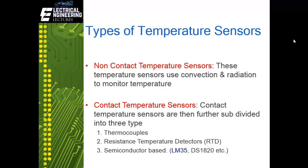The next category is resistance temperature detectors, which are similar to thermistors in that their electrical resistance changes with temperature. Resistive temperature devices consist of sensing elements, connecting leads, and measuring instruments. They are categorized further into two types: positive temperature coefficient (PTC) and negative temperature coefficient.